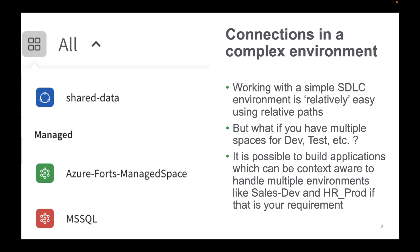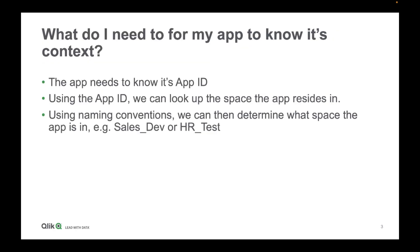However, if we add some logic to our Qlik scripts, and with the help of Qlik APIs, we can do this ourselves. So what do I need to know for my app to know its context? You need to know the app's unique ID — its app ID.